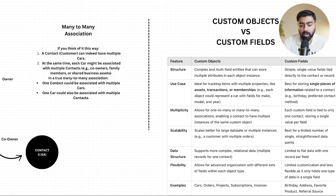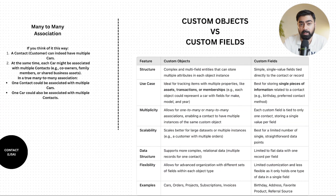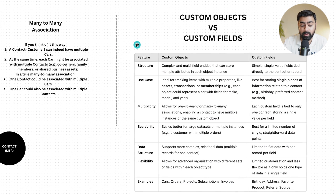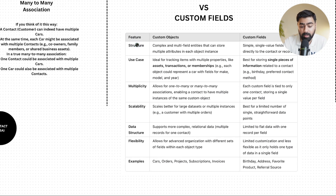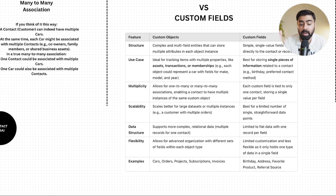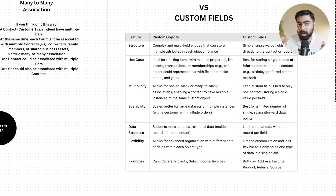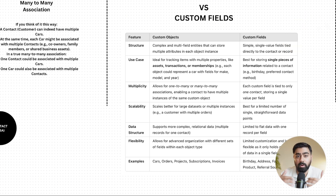When comparing custom objects versus custom fields — and this question is asked a lot — the main difference is structure. Custom objects can handle complex structures and relationships; custom fields cannot. Another key advantage is that custom objects can retain data over time. Custom fields can only save one value at a time, but with objects, you can attach the same contact to multiple objects simultaneously, preserving a history.